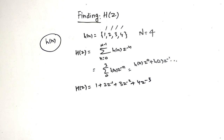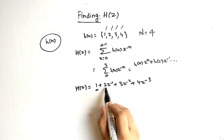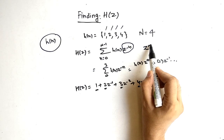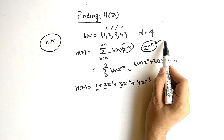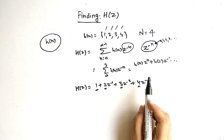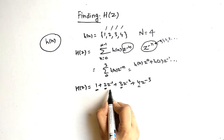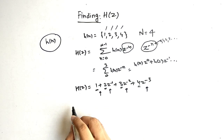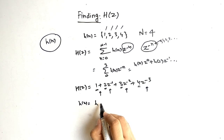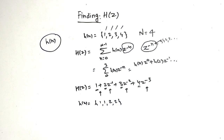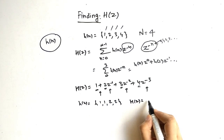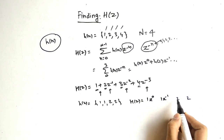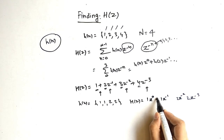You can see that the amplitudes are 1, 2, 3, and 4, and by the formula we get z to the power minus n, where n goes 0, 1, 2, 3. So we get all negative powers of z: z^0, z^(-1), z^(-2), z^(-3). By inspection, if you know the amplitudes and the z powers, you can write the Z-transform directly.